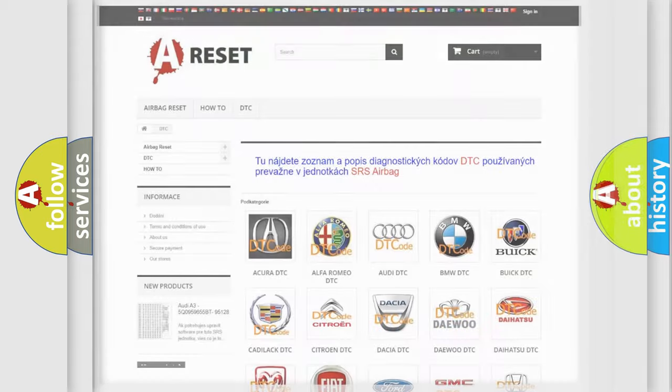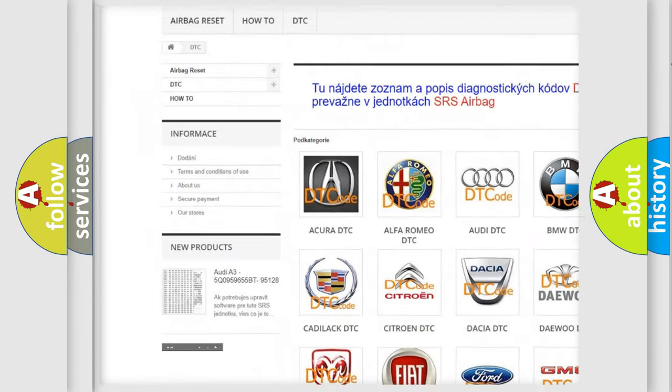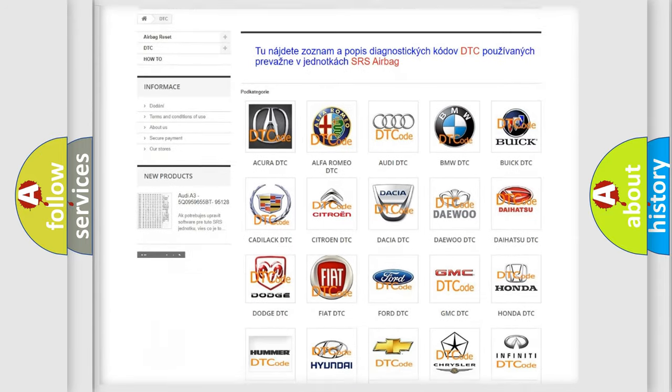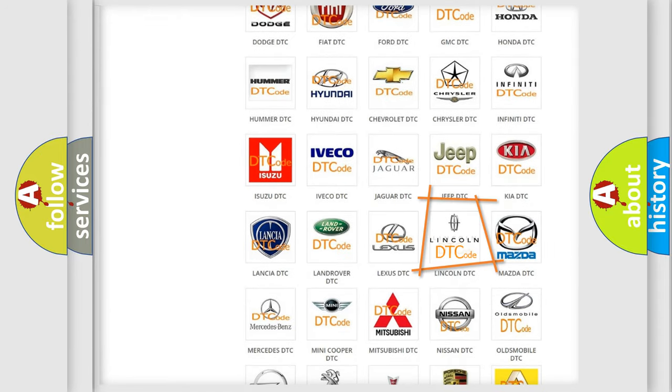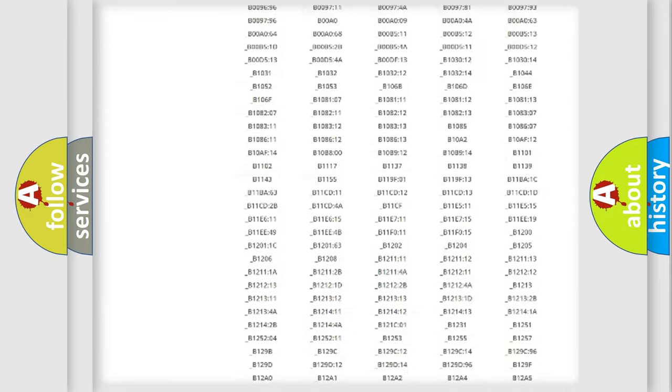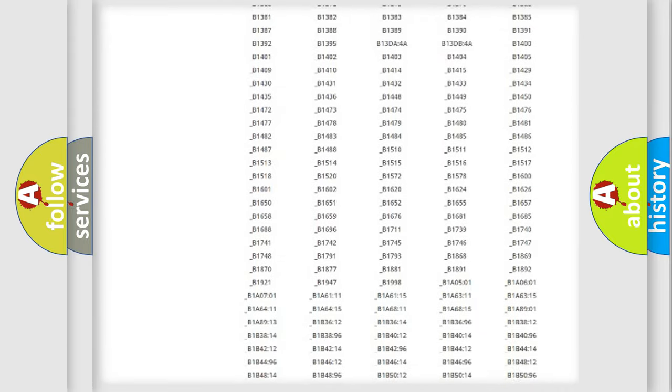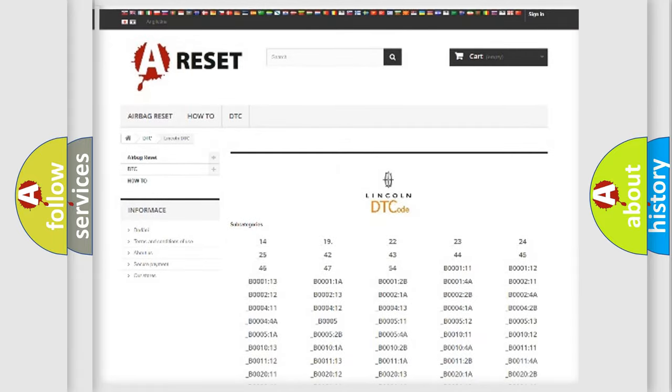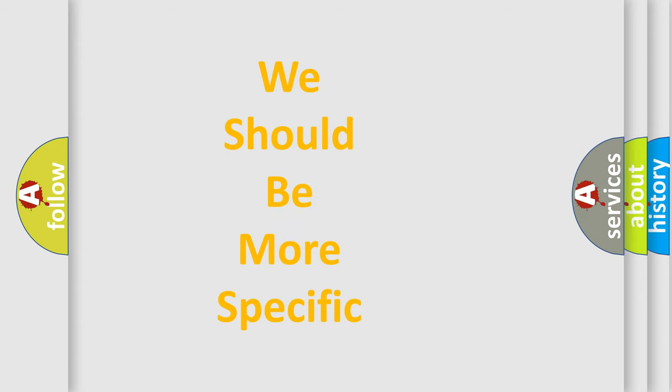Our website airbagreset.sk produces useful videos for you. You do not have to go through the OBD2 protocol anymore to know how to troubleshoot any car breakdown. You will find all the diagnostic codes that can be diagnosed in a link and vehicles. Also many other useful things. The following demonstration will help you look into the world of software for car control units.